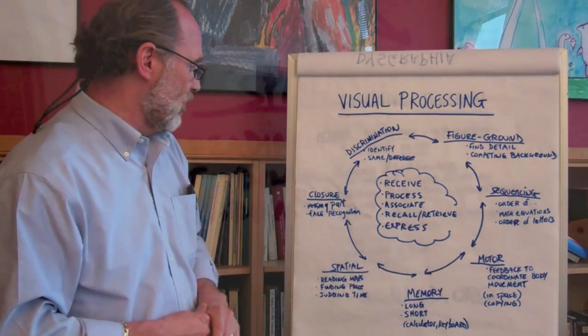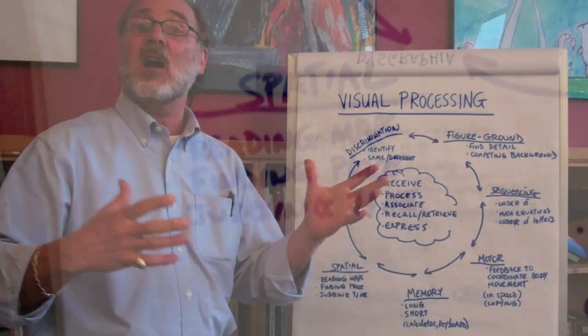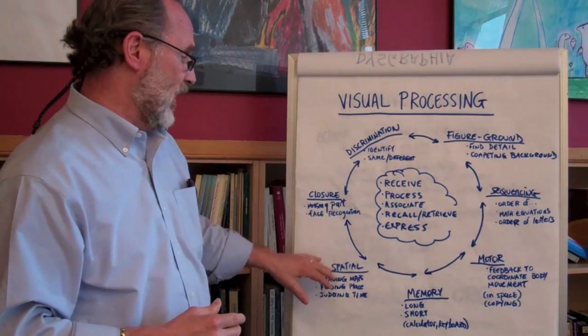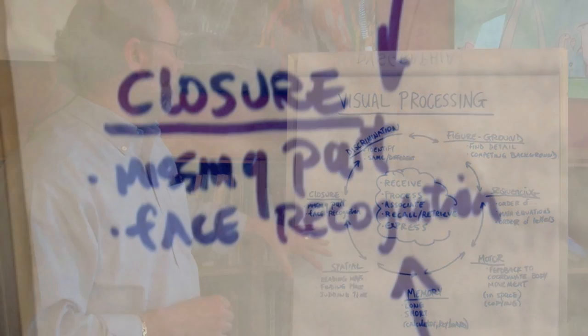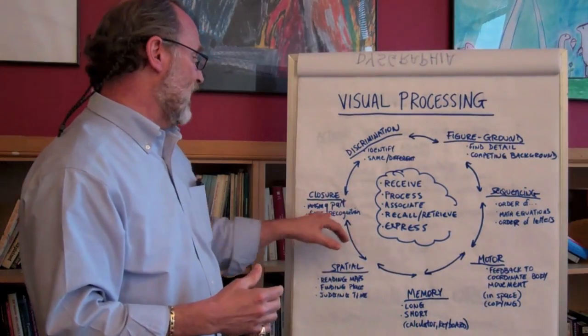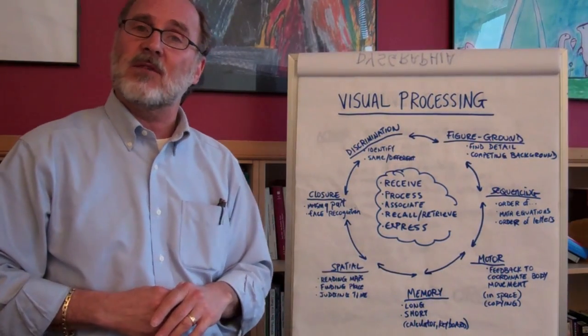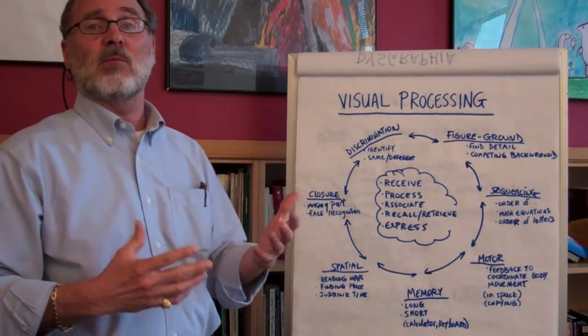Another thing in the visual processing domain has to do with spatial relations. Reading maps, finding their place or judging how long something takes. Judging time, for example, is an area of weakness for many students with learning disabilities. And visual closure, looking at something and saying, well there's a missing part, identifying what that missing part is. And even facial recognition is sometimes difficulty for students with learning disabilities who struggle in visual processing.